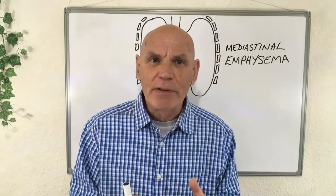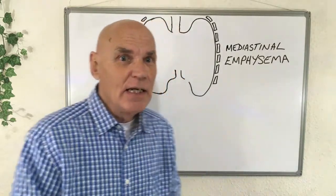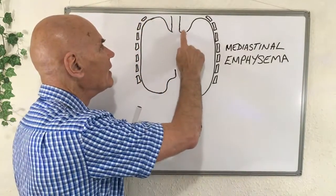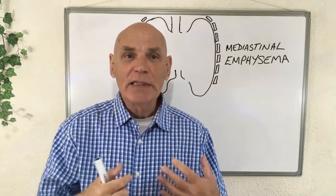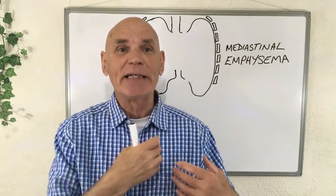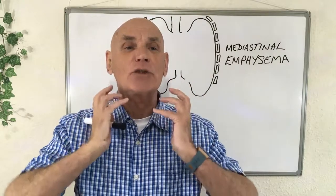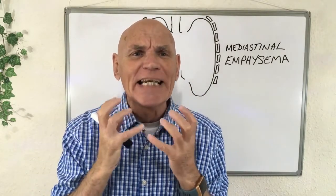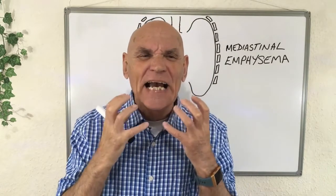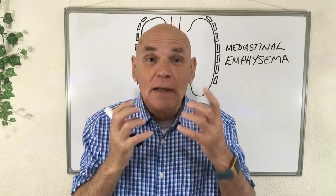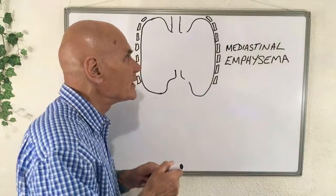Now let's see what happens if the lung burst somewhere else — up here at the top, right near the neck. As we held our breath and air expanded, it bursts there and comes around this part of the body, making the neck swollen with crispy skin — a bit like a big saggy fat balloon. This one is called subcutaneous emphysema.